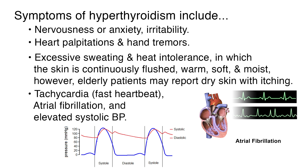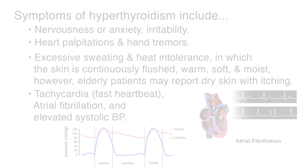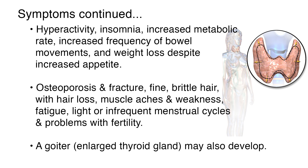Excessive sweating and heat intolerance, in which the skin is continuously flushed, warm, soft, and moist. However, elderly patients may report dry skin with itching. Additional symptoms include tachycardia or fast heartbeat, atrial fibrillation, elevated systolic blood pressure, hyperactivity, insomnia, increased metabolic rate, increased frequency of bowel movements, and weight loss despite increased appetite.